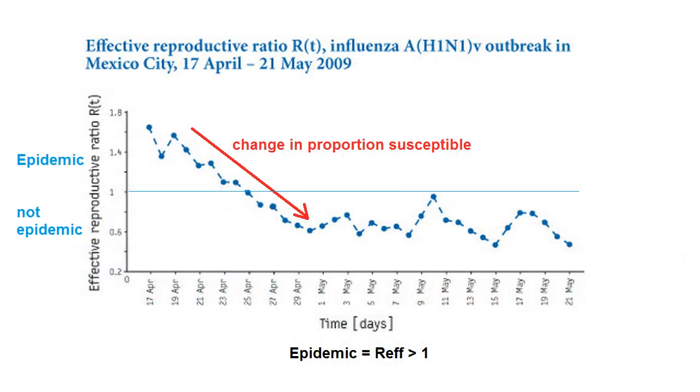This is the statistic that changes over time, as more people become resistant to the disease due to immunity, or fewer susceptibles are available to be infected because they're isolated or dead.